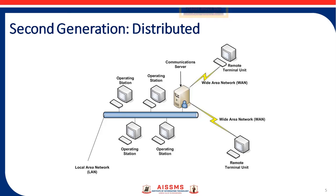Some of the LAN protocols used were of a proprietary nature, where the vendor created its own network protocol rather than adopting an existing off-the-shelf one. This allowed a vendor to optimize its LAN protocol for real-time traffic, but it limited the connection of networks from other vendors to the SCADA LAN. Distribution of system functionality across network-connected systems served not only to increase processing power, but also to improve redundancy and reliability of the system as a whole.